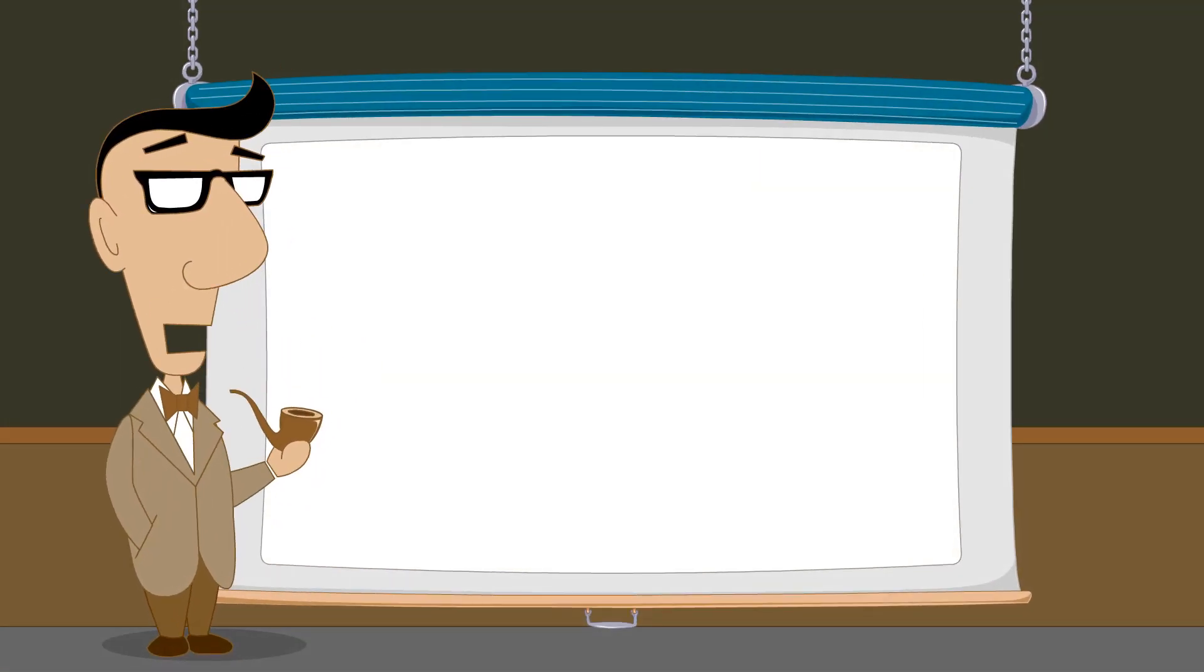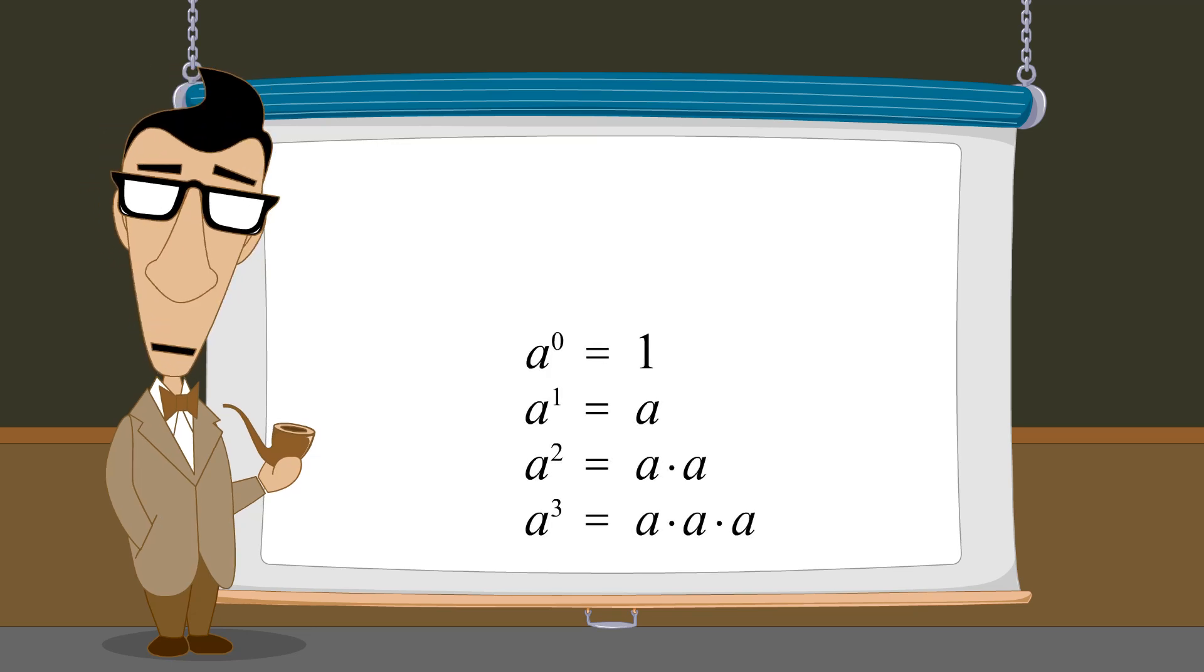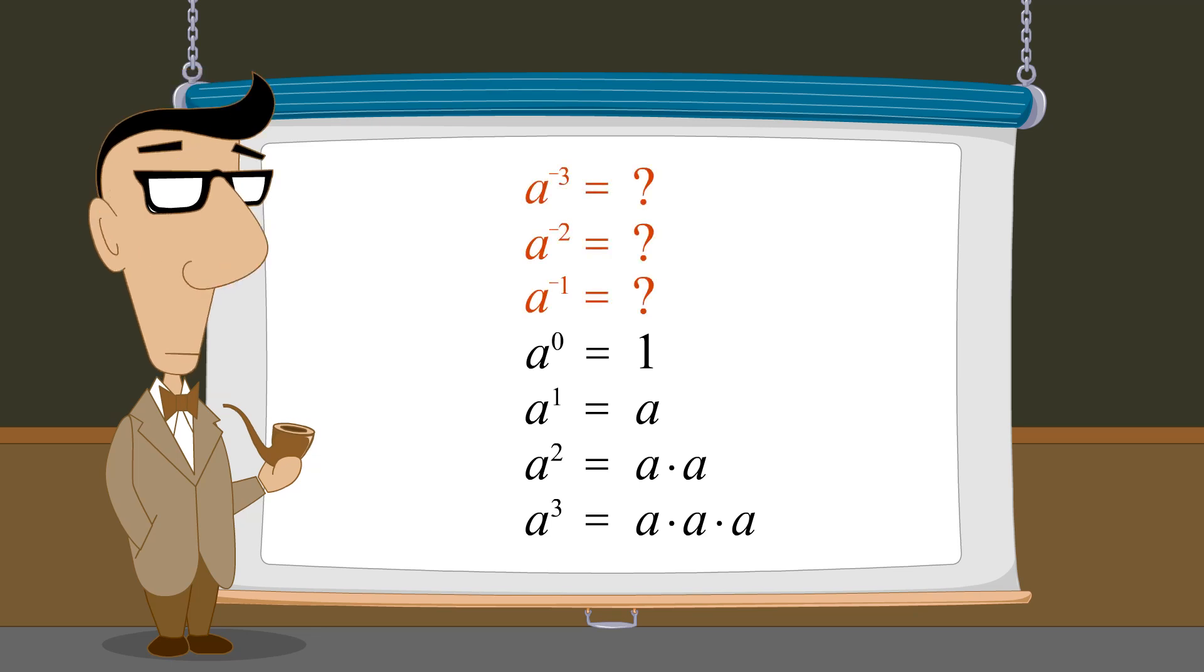So far, we have seen the meaning of integer exponents of zero or greater. But is there any meaning to a negative exponent? Once again, we can use the rules of exponents to determine the meaning of raising a number to a negative power.